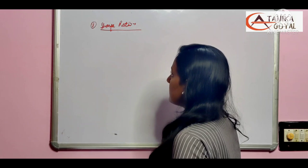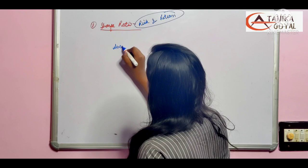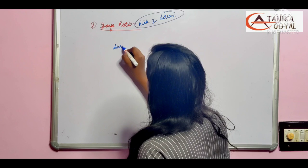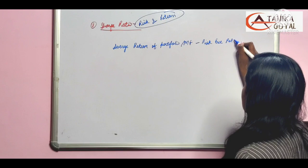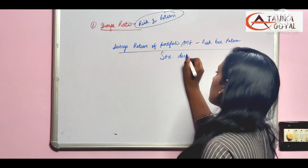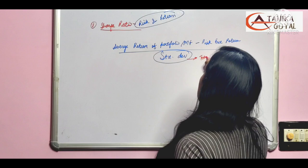Sharpe ratio is very simple. Basically, we have to take both risk and return. The formula is average return of the portfolio or the mutual fund minus risk-free return divided by standard deviation. My standard deviation is considered as my total risk. So what did I do? Whatever my additional return is from risk-free return.